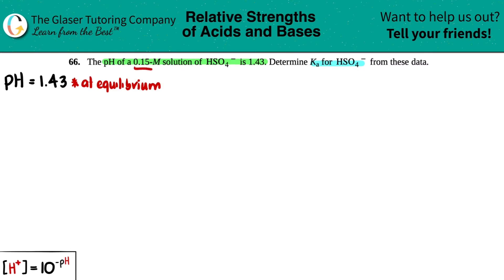They said we started off with a 0.15 molar solution of HSO4-. From both of these information, we want to find out the Ka value, the ionization constant for the acid HSO4-.